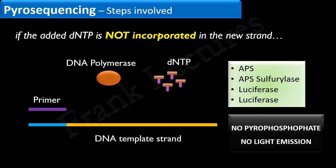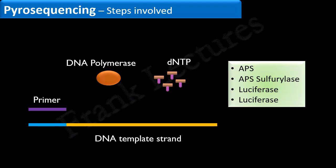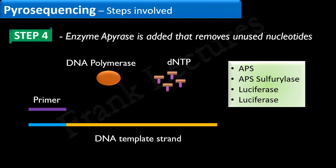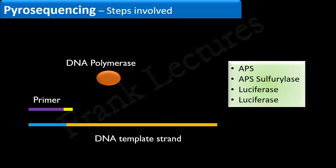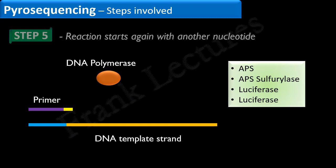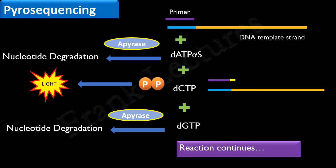No light emission happens when the incoming nucleotide is not complementary to the nucleotide of the template strand. In both cases, whether the nucleotide is incorporated or not, extra or unused nucleotides will be present. These extra nucleotides are removed from the reaction by adding the enzyme apyrase, the nucleotide-degrading enzyme. After degradation of unused nucleotides is complete, the Pyrosequencing reaction starts again with the addition of the next nucleotide. This process is repeated, adding each nucleotide one after the other until synthesis is complete.